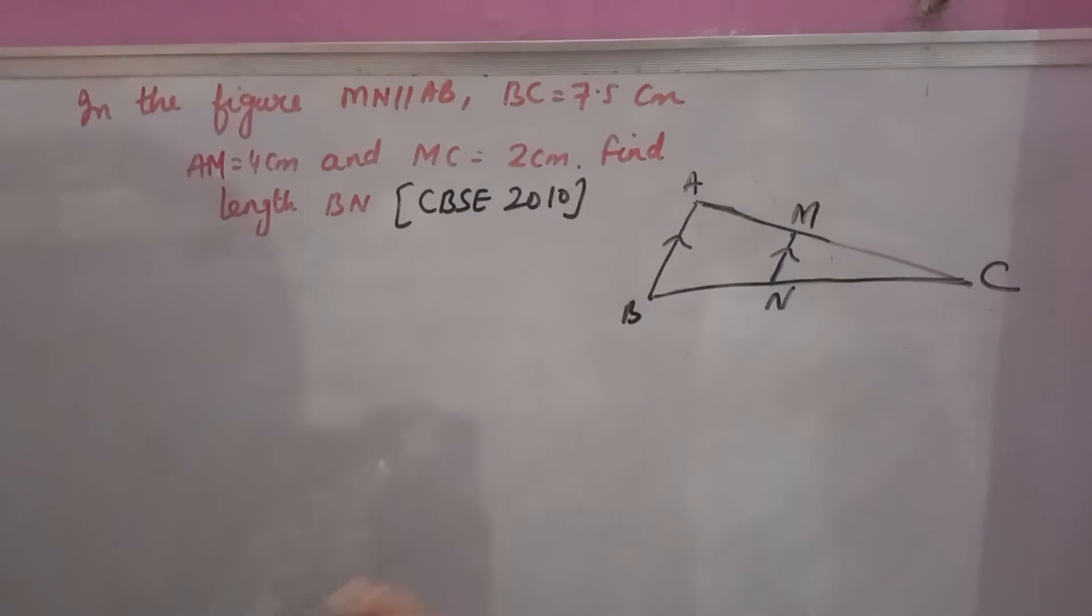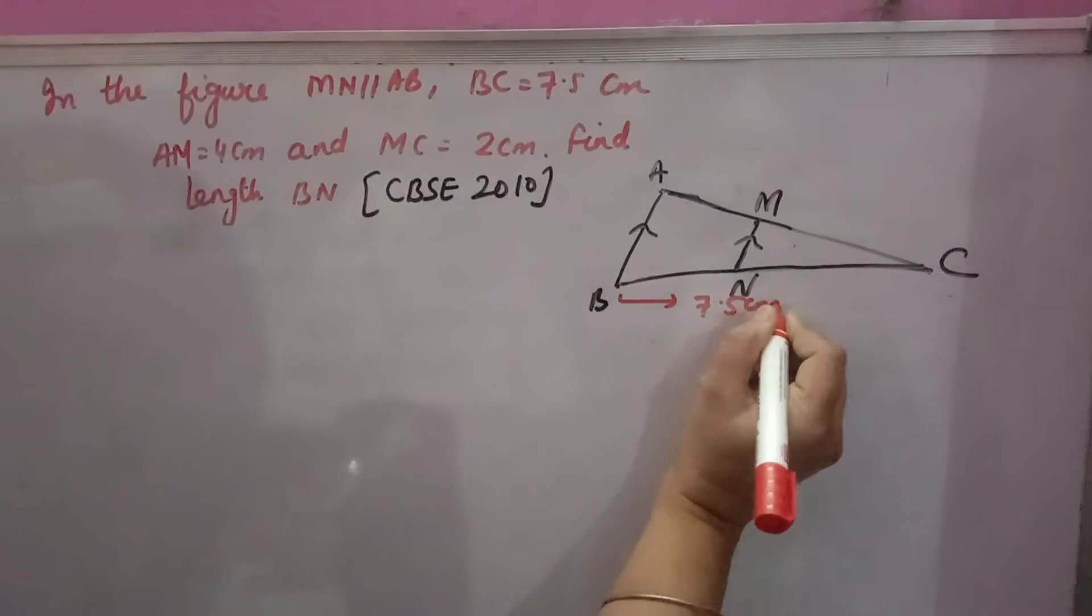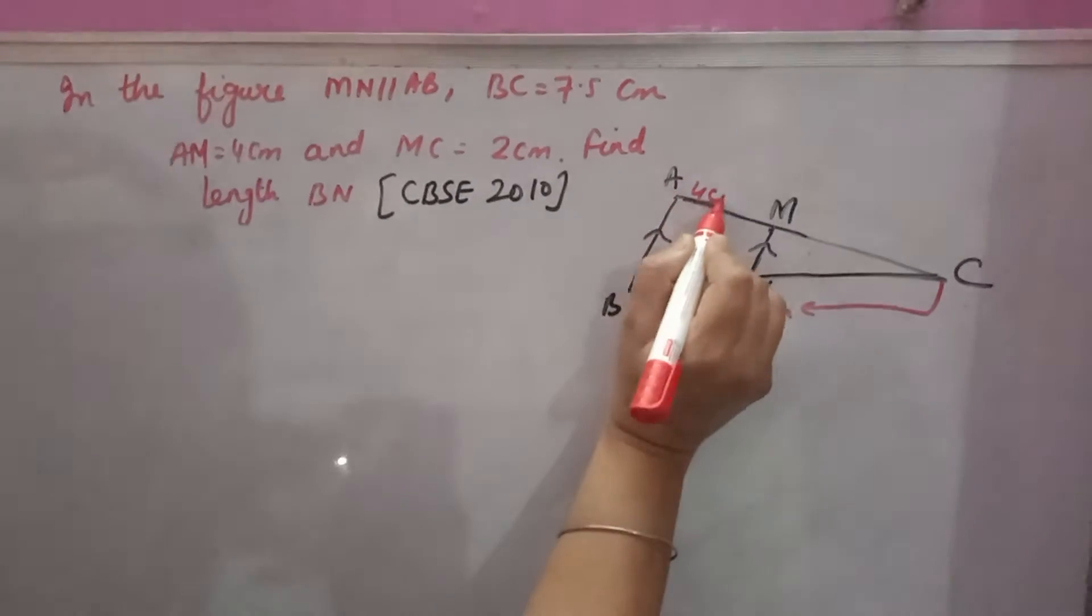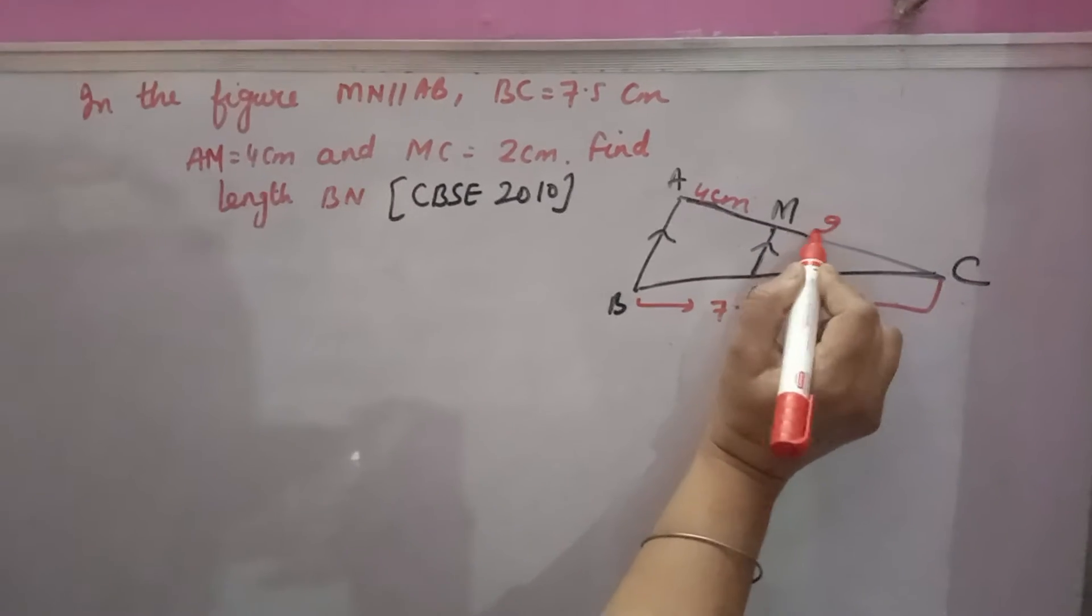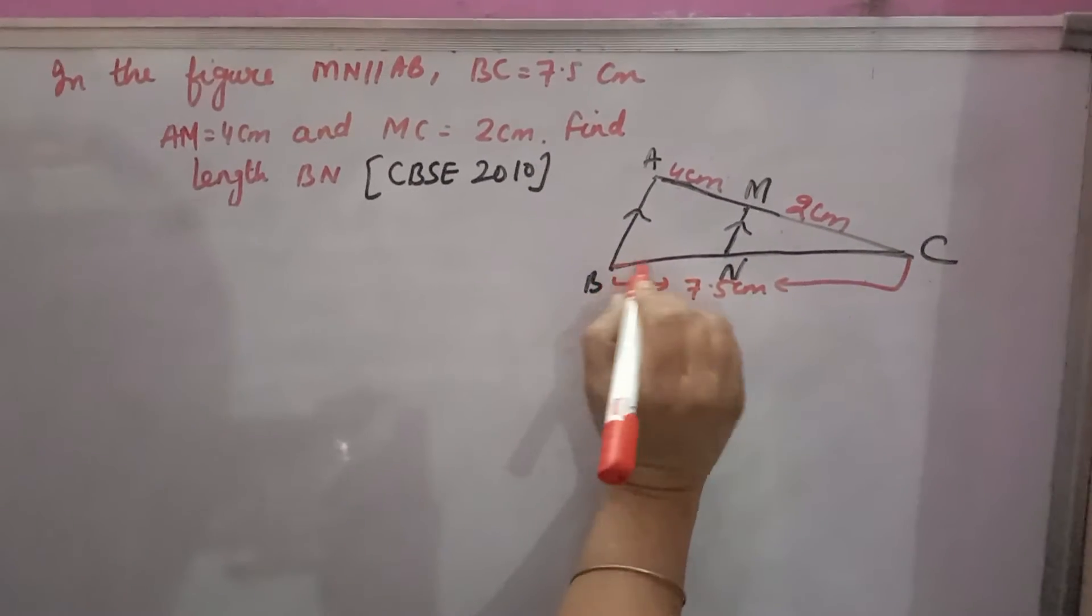This is parallel to AB. BC is 7.5 cm. AM is 4 cm, MC is 2 cm. You have to find BN.